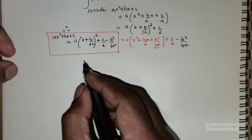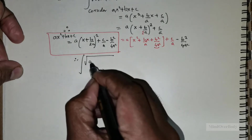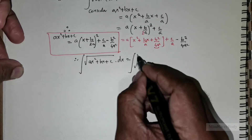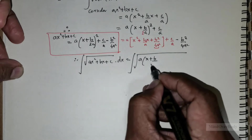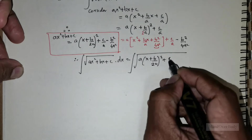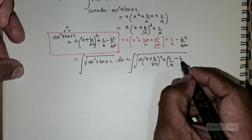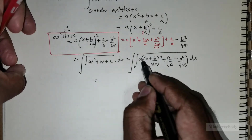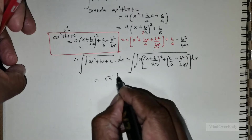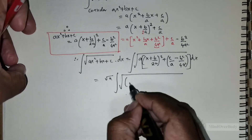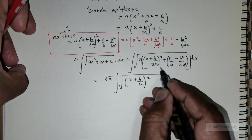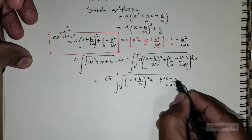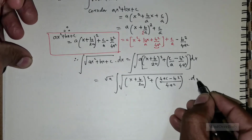So the question can now be rewritten as the integral of the square root of a times (x + b/(2a))² + c/a − b²/(4a²), times dx. Taking a out, that becomes √a times the integral of the square root of (x + b/(2a))² + (4ac − b²)/(4a²), times dx.